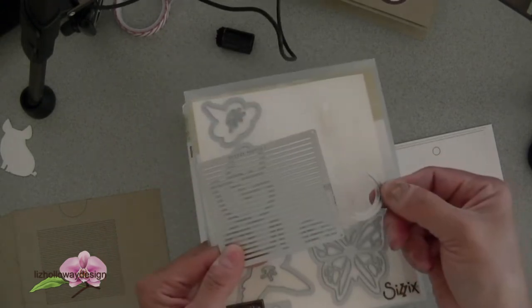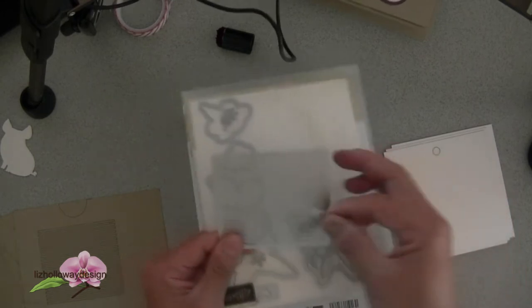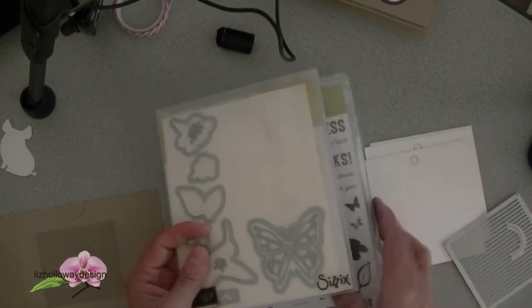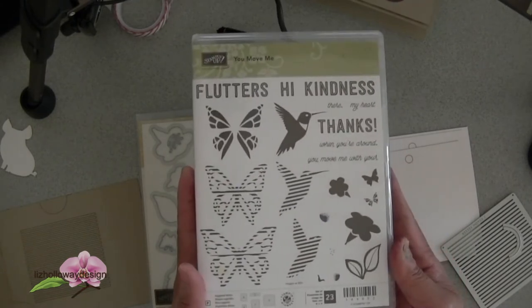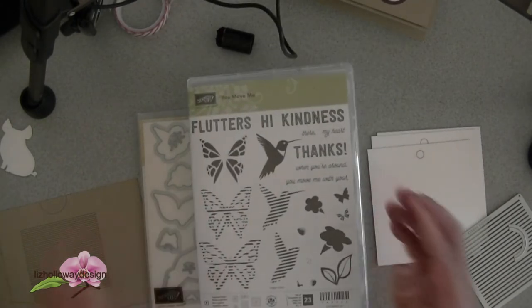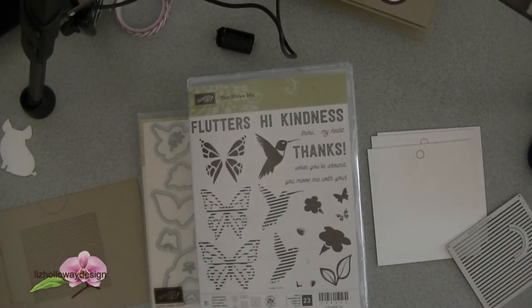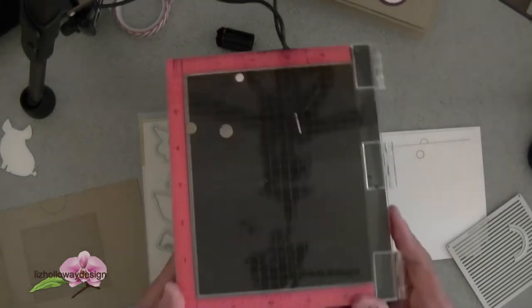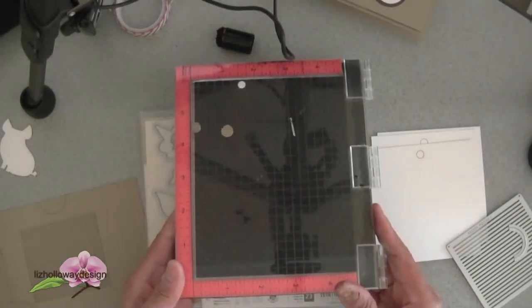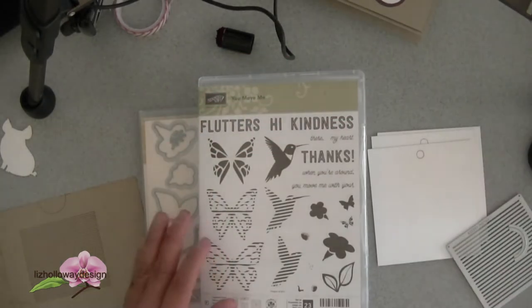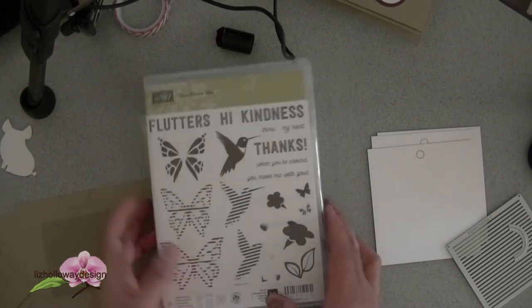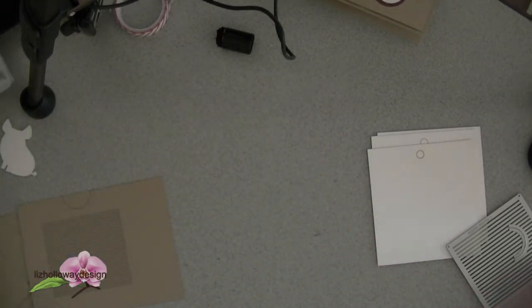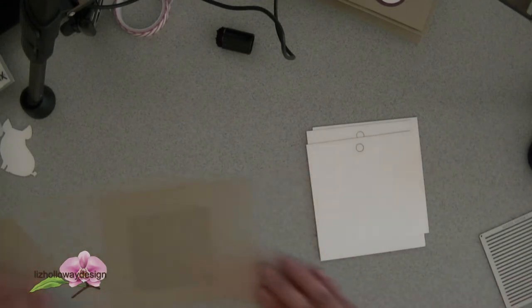Let's get started. You're going to need the You Move Me die and you're going to use the grid portion of the die as well as the one inch half circle. You're also going to need the You Move Me stamp set and we're going to use the hummingbird one and two as well as the MISTI.